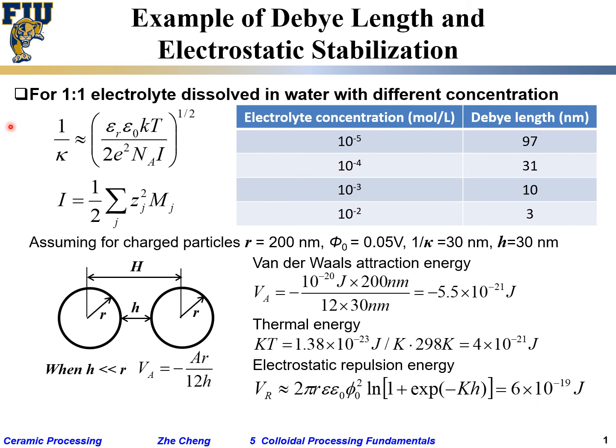Okay, so the colloidal suspension, as we look at here in the example, would be stable against agglomeration, soft agglomeration.